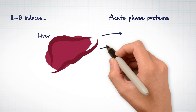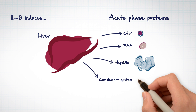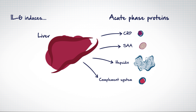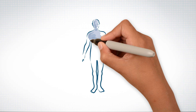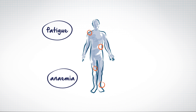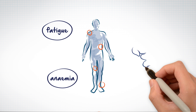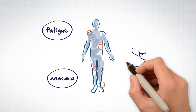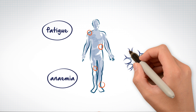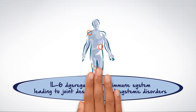IL-6 is a main inducer of acute phase proteins produced by the liver, which contribute to systemic disorders including fatigue and anemia. In addition, IL-6 can sensitize peripheral nerves and thereby contribute to pain.